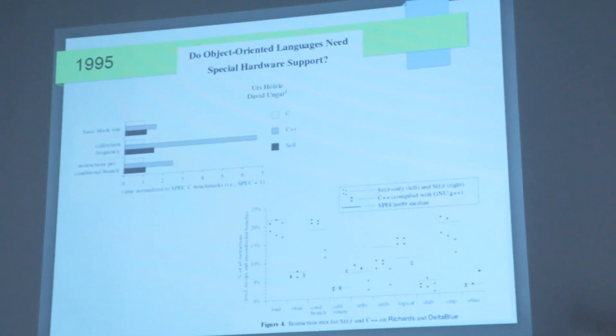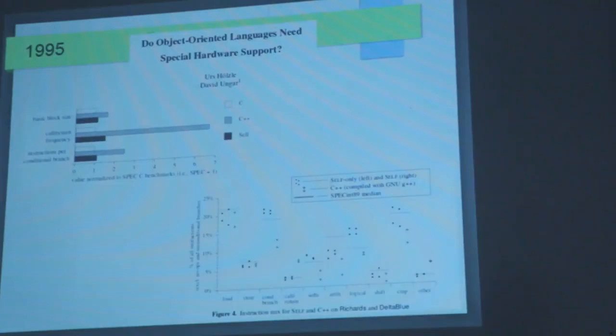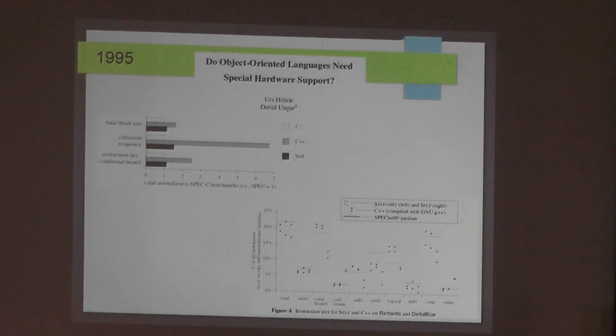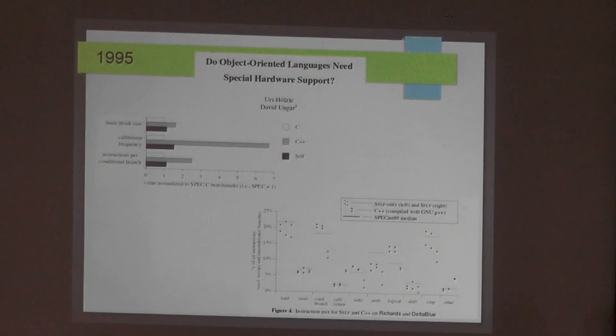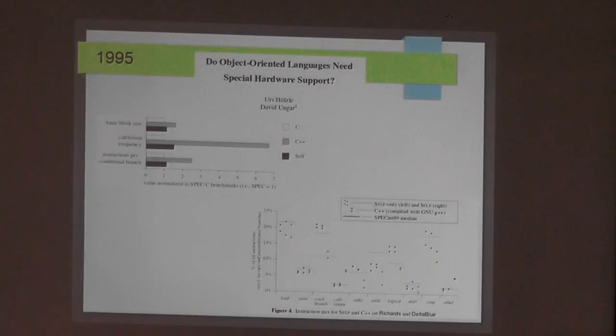At ECOOP 95, David Unger and his student Urs Hoelzle decided to revisit Smalltalk on the RISC — the SOAR, now renamed RISC-3. They found that the output from the Self compiler looked a lot like C, not C++. So Hoelzle said: we don't need hardware for object-oriented programming languages, we need good compilers. The SOAR results came from bad compilers; now we have good compilers and don't need special hardware. I don't fully agree — I think it's a limited exploration of the design space — but it was an interesting result that discouraged a lot of research into object-oriented hardware design.